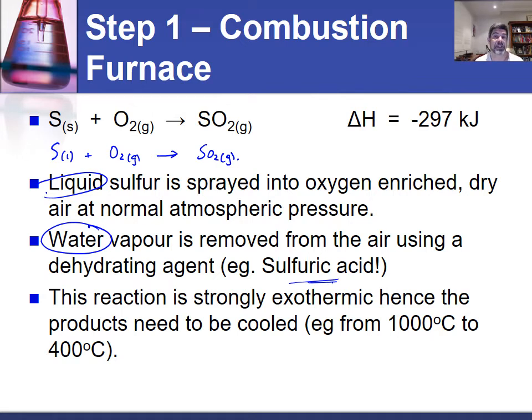But however this particular process is one that occurs at very high temperatures so we also you'll notice from the delta H value that this is an exothermic reaction and because of that we're going to produce heat energy as a result of this reaction and therefore we want to make sure that as the process is occurring we want to be cooling that mixture down back to around about 400 degrees C. So that's the first step in the process, conversion of sulfur into sulfur dioxide.